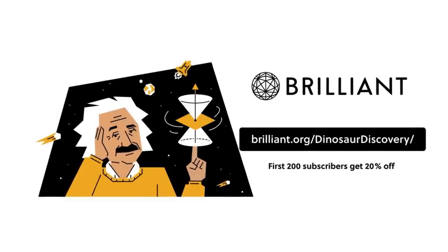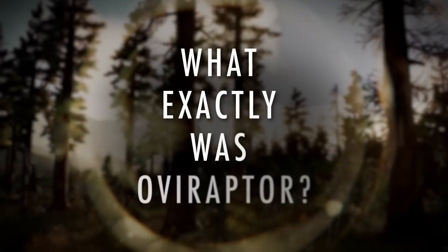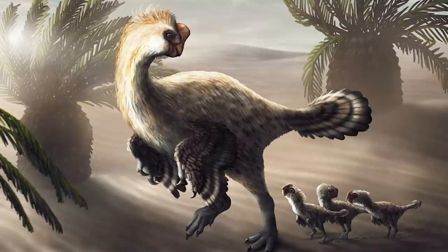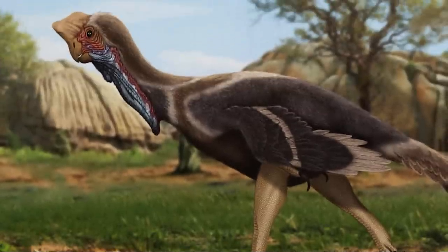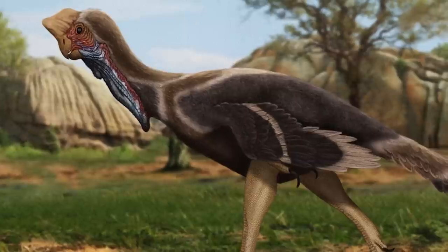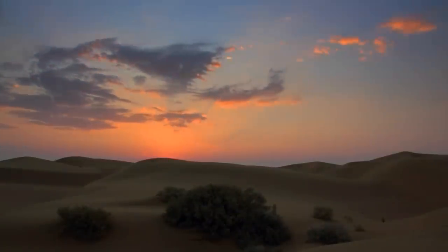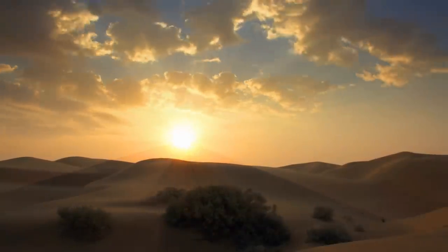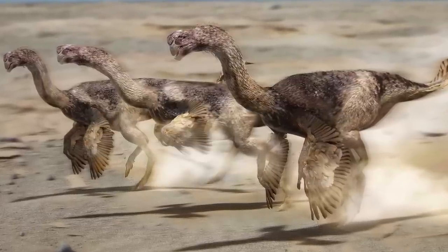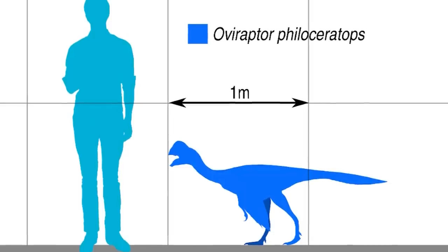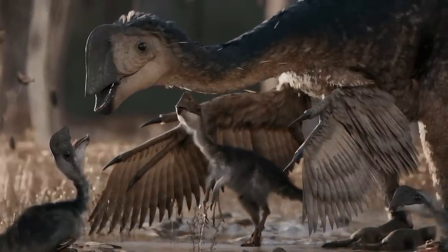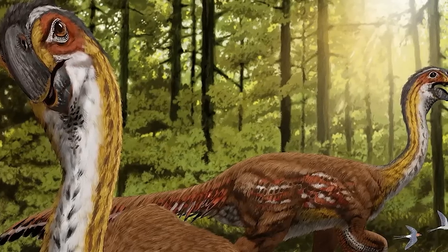You will likely already be familiar with Oviraptor, even if not with the name — it is a dinosaur often represented in mainstream paleo-media. Superficially turkey-like, this was a theropod dinosaur that lived between 75 and 71 million years ago in what is now Mongolia in the late Cretaceous period. The holotype specimen of Oviraptor philoceratops, the only species discovered to date, was around a meter and a half long from head to tail, and is assumed to have weighed between 33 to 40 kilograms. It was a lightweight theropod, and not particularly large at all.